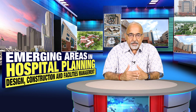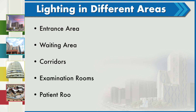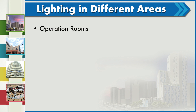Lighting in different areas: entrance areas, waiting areas, corridors, examination rooms, patient rooms, operation rooms, imaging rooms, and NICUs all require different lighting.